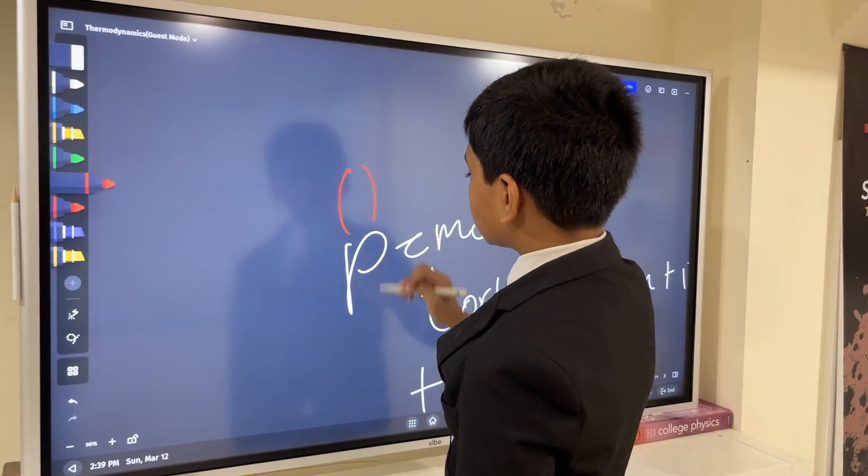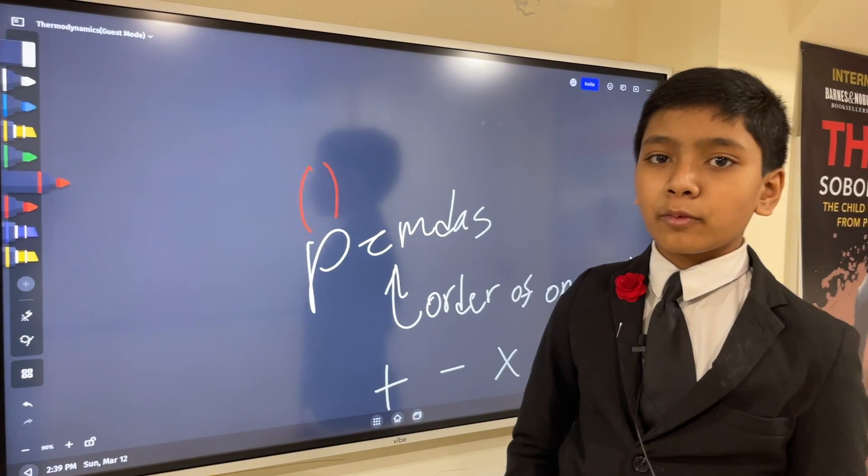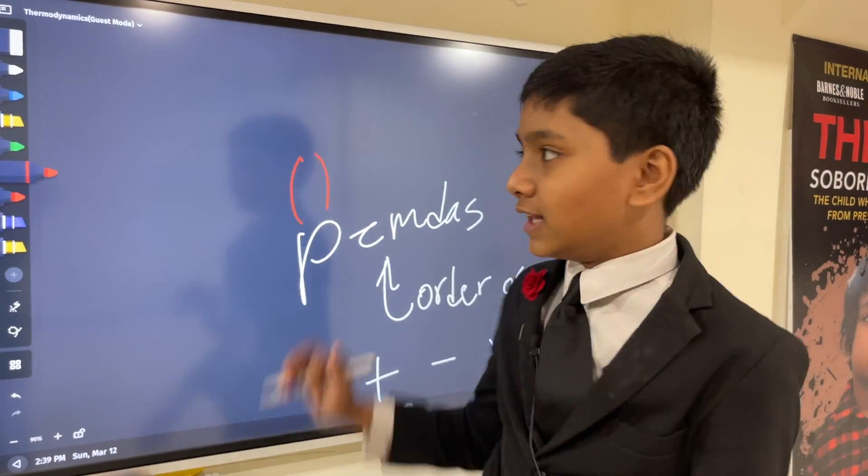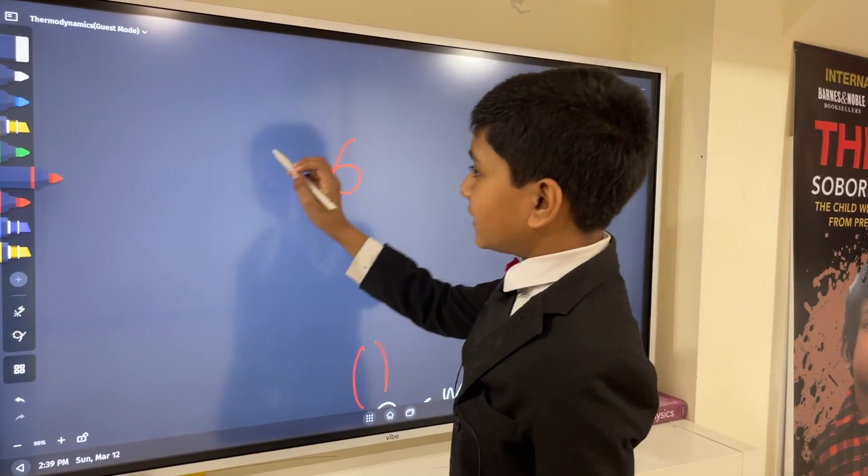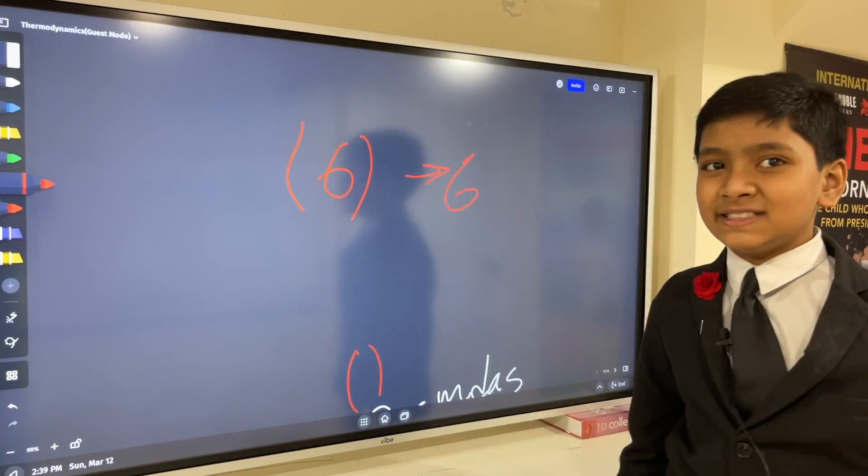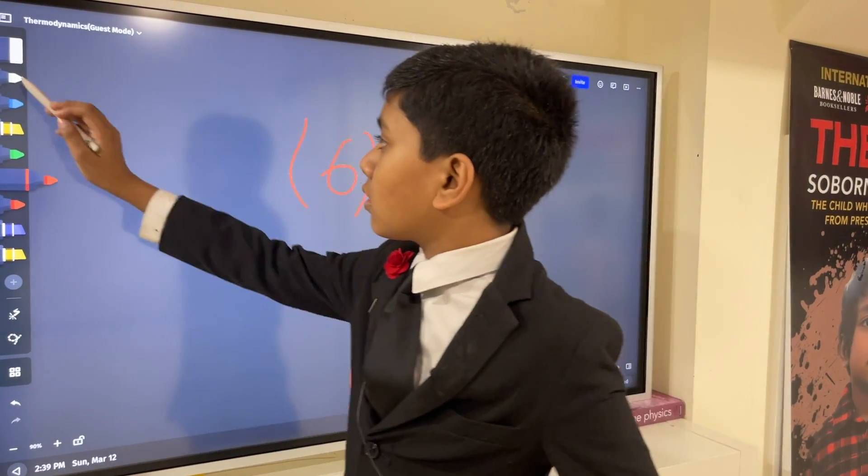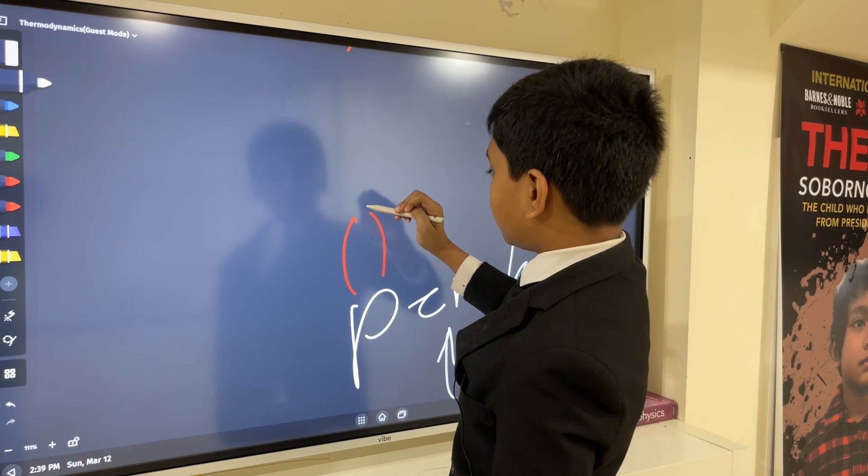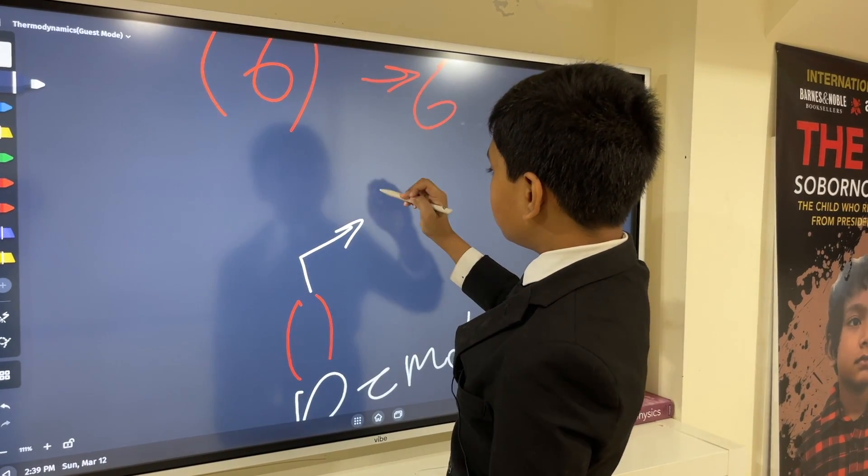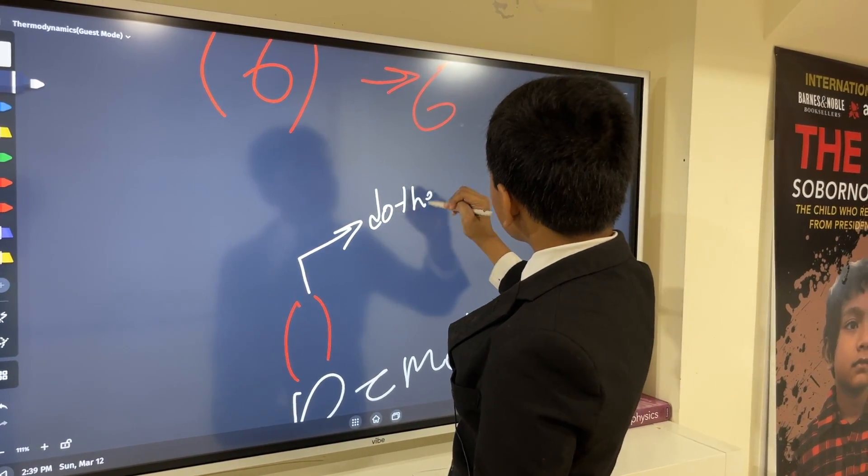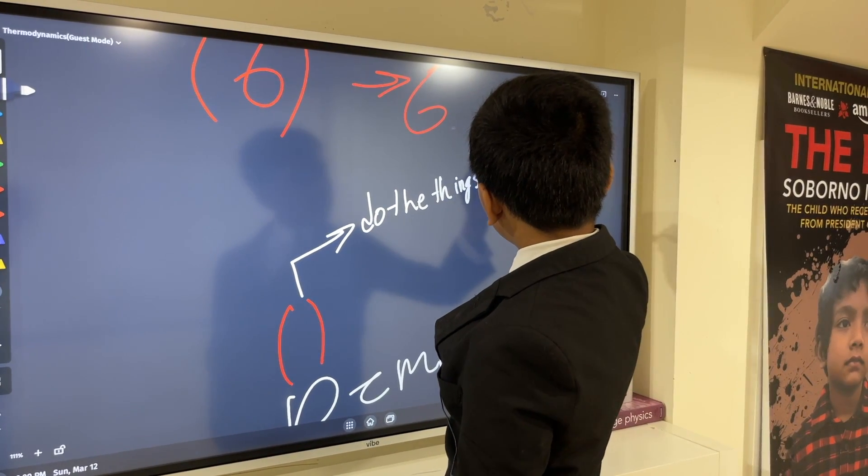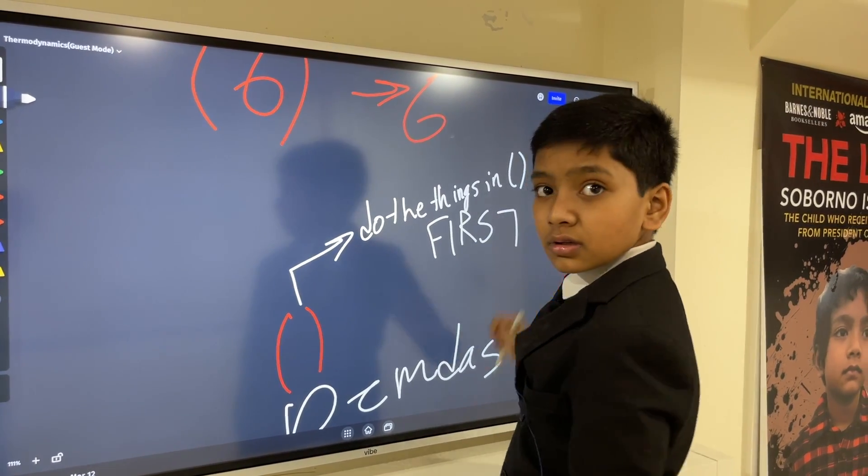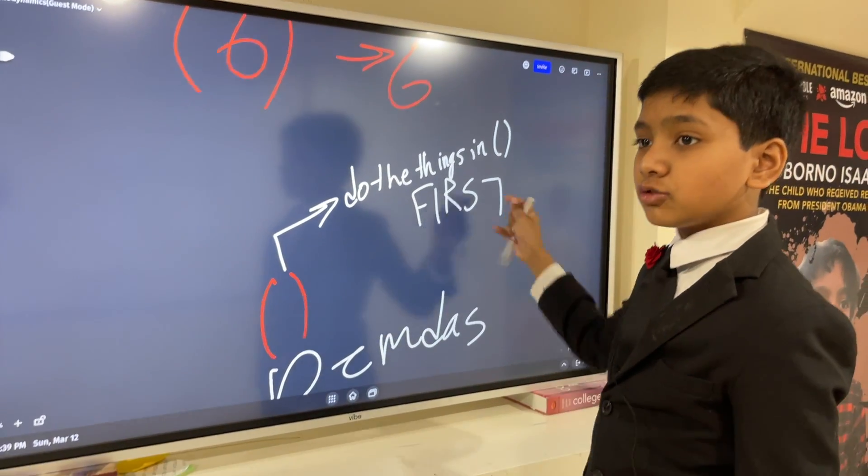So, what does the P stand for? Parentheses. Now, I know, parentheses aren't exactly an operation. Putting parentheses around a six isn't going to change the six. But, it's saying that because it's basically saying, do the things in the parentheses first. That's basically what it's trying to say.